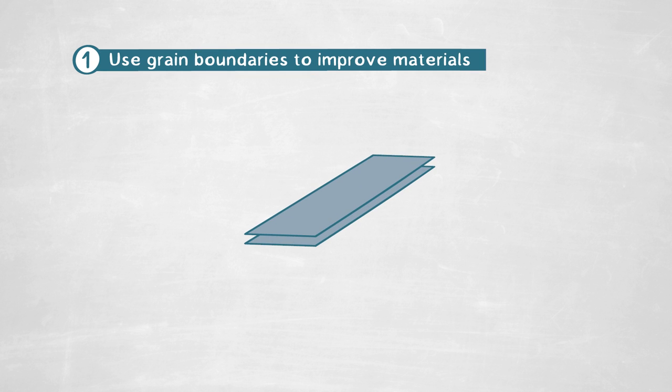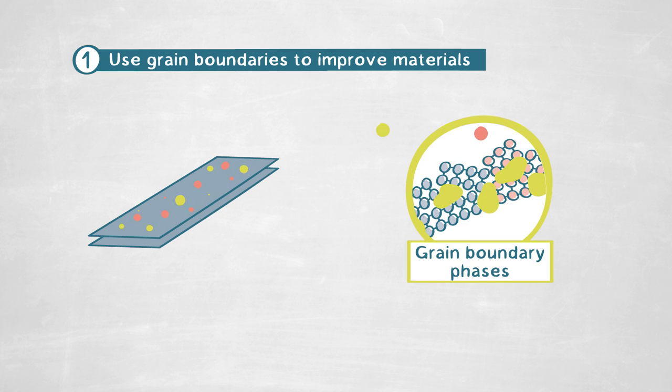There are multiple pathways we are pursuing: further advancing our understanding of these interfaces, but also using them to make materials better. Real materials contain solutes and impurity elements from the production process. The question is how these solutes interact with the different grain boundary phases — can we add a certain element to adjust a specific grain boundary phase and thereby a certain property of the interface? These are the things that keep us going.